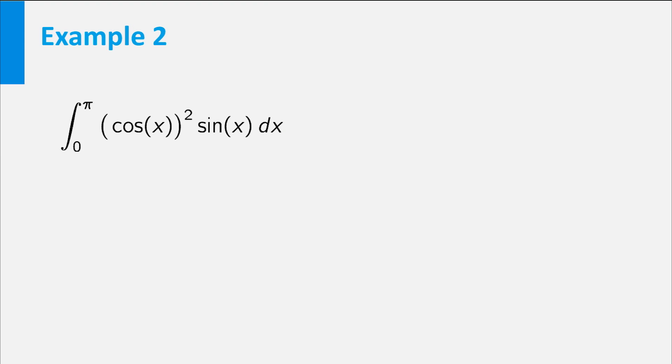There is one more thing that you should be aware of. After a substitution, the boundaries may be in the wrong order. For example, consider the integral from 0 to pi of cosine of x squared times sine of x dx. We can substitute u equal to cosine of x. Then du is equal to minus sine of x dx, which we can rewrite to sine of x dx equal to minus du. We can re-express the integral as integral of minus u squared du.